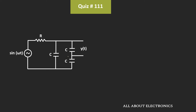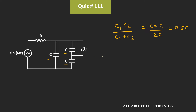First, let's find the equivalent capacitance of these three capacitors. As you can see, these two capacitors are connected in series. That means their equivalent capacitance will be of the form C1·C2 divided by C1 plus C2, which equals C·C divided by 2C, that is equal to 0.5C. The series combination of these two capacitors is connected in parallel with the third capacitor, so the equivalent capacitance will be C plus 0.5C, which equals 1.5C.